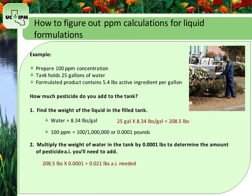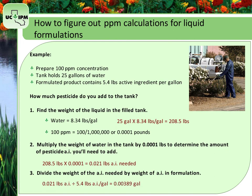Now divide the weight of active ingredient needed by the weight of active ingredient in the product. 0.021 pounds of active ingredient per tank divided by 5.4 pounds of active ingredient per gallon equals 0.00389 gallons per tank. Converting to fluid ounces by multiplying by 128 gives 0.5 fluid ounces per tank. So you would need to add 0.5 fluid ounces of the pesticide to your 25-gallon tank to get a 100 parts per million solution.